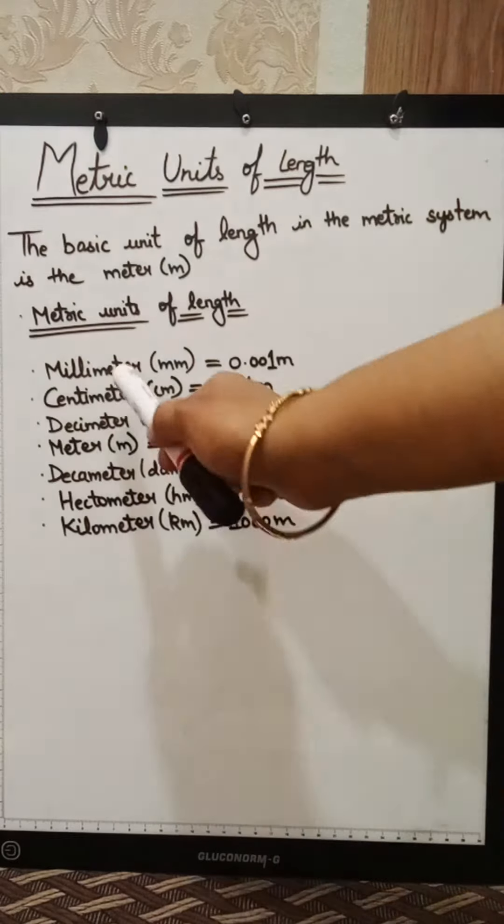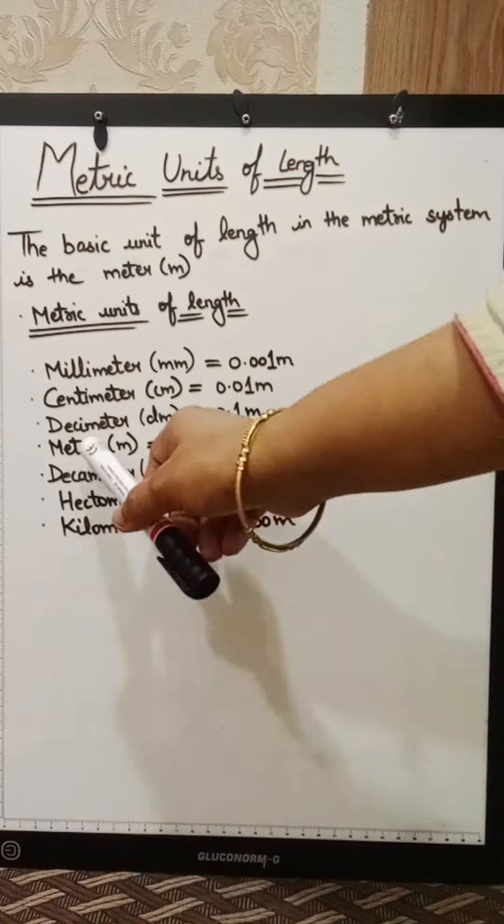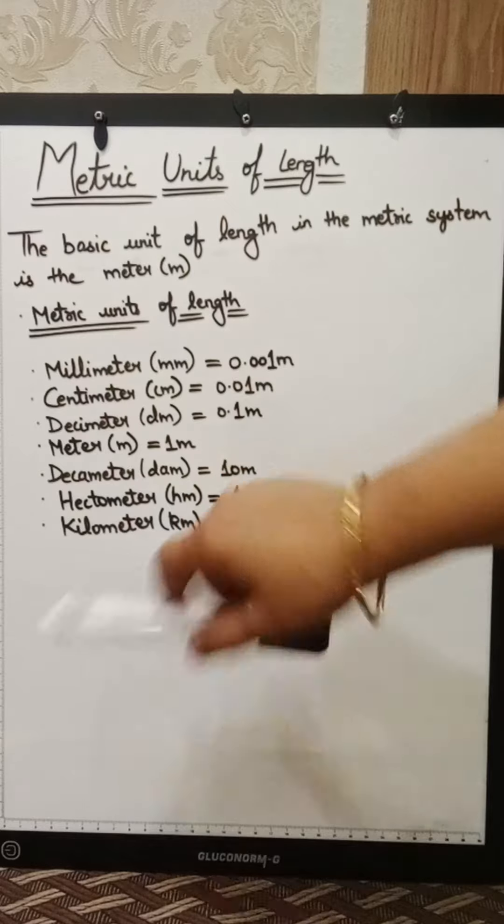The metric units of length are millimeter, centimeter, decimeter, meter, decameter, hectometer, and kilometer.